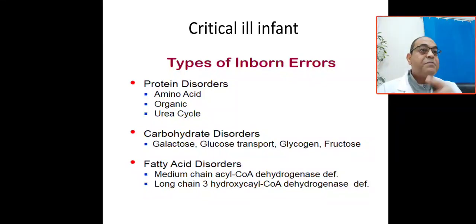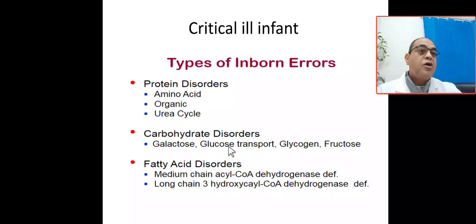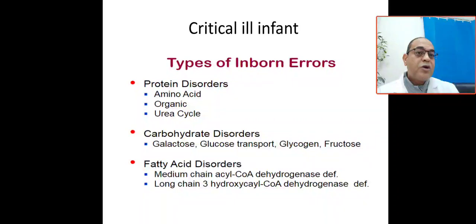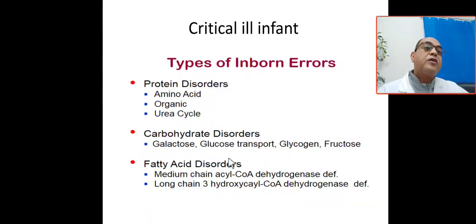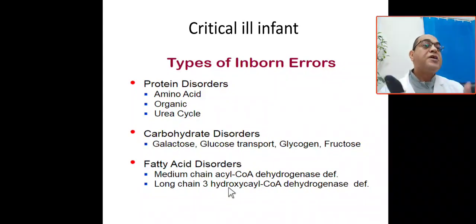For the critical infant, differential diagnosis is sepsis, cardiac, and metabolic — requiring high index of suspicion. Types of inborn errors of metabolism include: protein disorders — amino acidopathy, organic acidemia, and urea cycle defect; carbohydrate disorders — defects in galactose, glucose transport, glycogen, and fructose metabolism; and fatty acid oxidation disorders — medium chain acyl-CoA dehydrogenase (MCAD), long chain, and very long chain acyl-CoA dehydrogenase (VLCAD) deficiency.